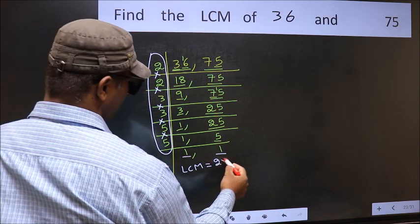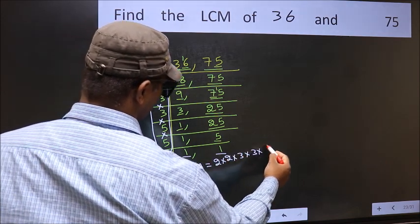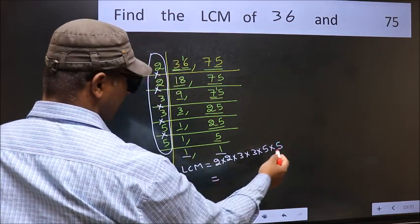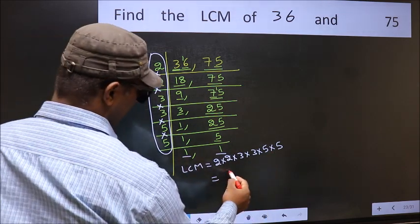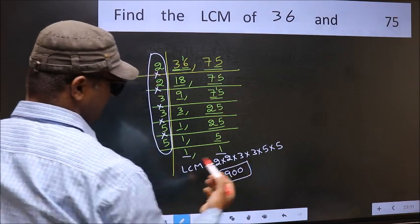That is 2 times 2 times 3 times 3 times 5 times 5. So when we multiply these numbers, we get 900 as our LCM.